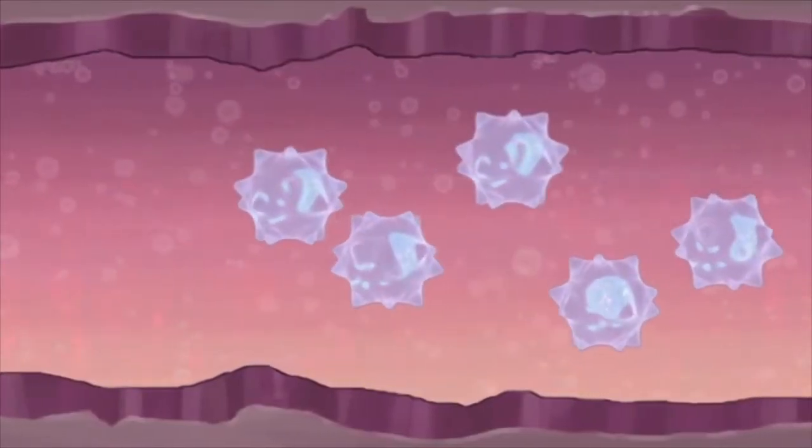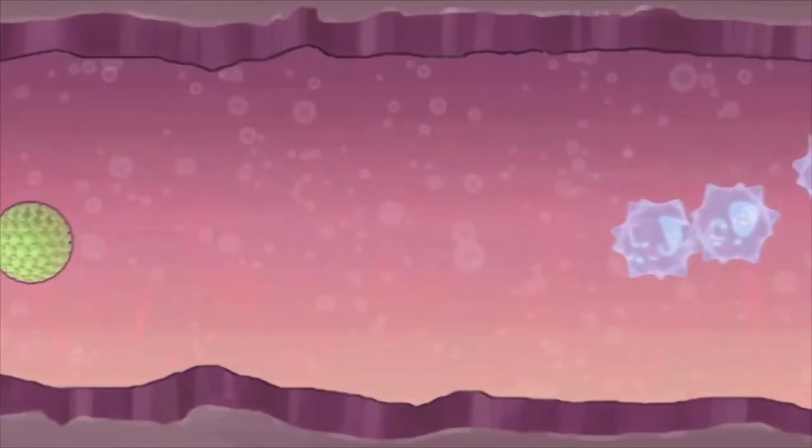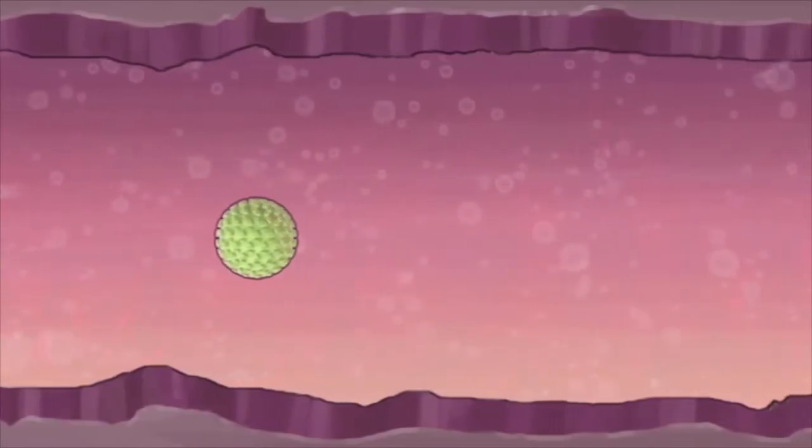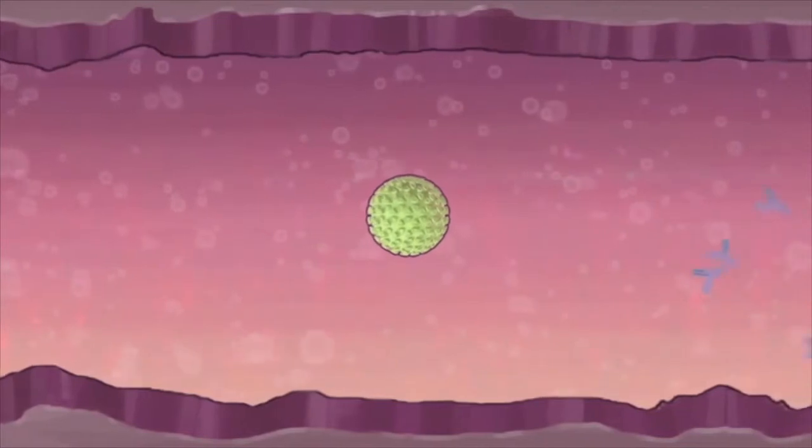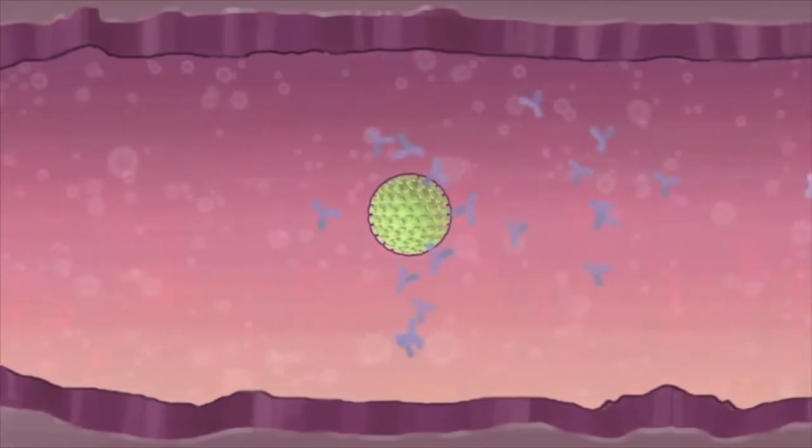Once your immune system has encountered a germ, it can recognise it the next time it sees it. Your immune system is able to fight off the germs before you become unwell. This is called immunity.